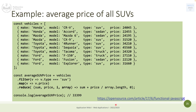The chaining example computes the average price of SUVs from a car array. First it filters by car type (SUV only), then maps to extract only the prices, then reduces to calculate the average price. This is chaining: the output of filter is passed to map, and the output of map is passed to reduce. The final result is stored in averagePrice.